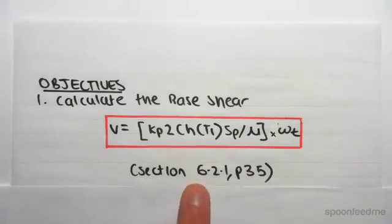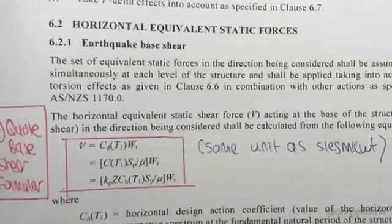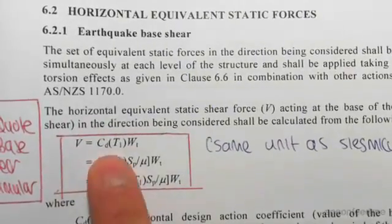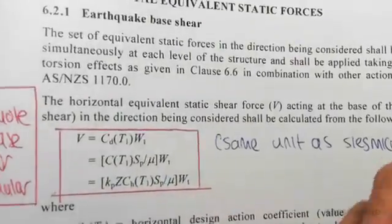This is from section 6.2.1 on page 35. I'll zoom in to show you the formula. This is the compressed version - I've literally rewritten this on the page. So we need to find all these values.